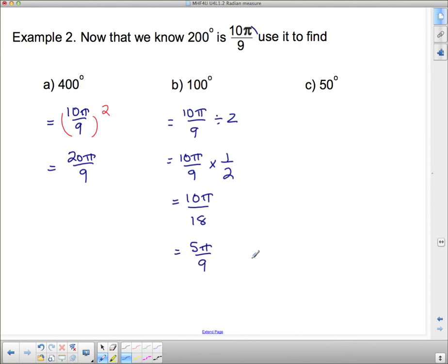Okay. And we could have done that right in here. I could have canceled the 2 into the 10 right there, and said 2 goes into 10 five times, and we would have got immediately to 5 pi by 9.